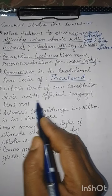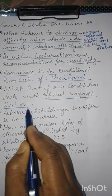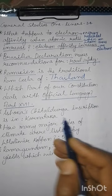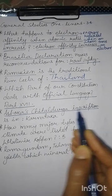Which part of our Constitution deals with official language? राजभाषा से संविधान का कौन सा भाग संबंधित है? उत्तर है — भाग 17 संविधान का राजभाषा से संबंधित है। Ashoka's Chitaldurg inscription — अशोक का चितलदुर्ग अभिलेख कहाँ है? उत्तर है — यह कर्नाटक में मिला है।